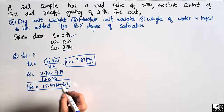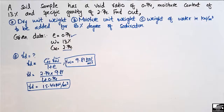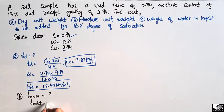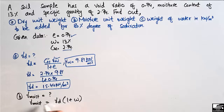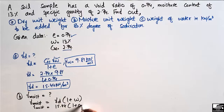The second unknown parameter is the moisture unit weight γmoist. It can be found by multiplying the dry unit weight by (1 + water content). So γmoist = γD × (1 + w), where γD = 15.44 and water content w = 13% or 0.13 in decimal.